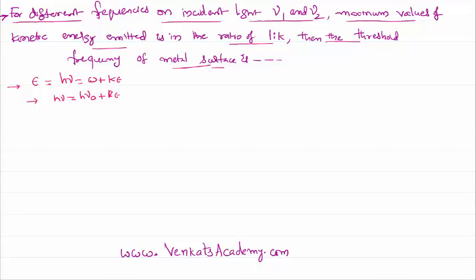Two equations can be written. When the frequency of incident radiation is nu1, work function is h*nu0, and if we call kinetic energy as 1x. In the second case, when the frequency is nu2, work function remains the same because the metal is the same, but this is going to be kx, because it is given that their kinetic energies are in the ratio of 1 is to k. From this we have to calculate the value of nu0.